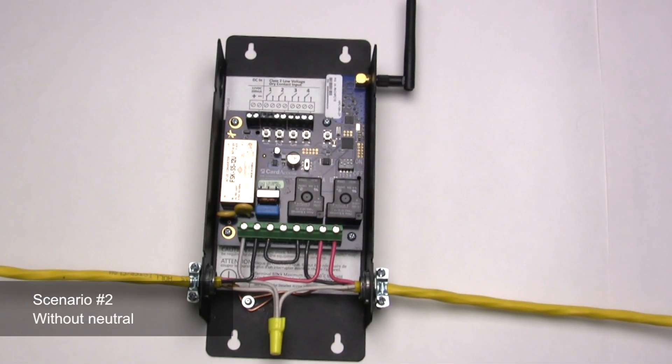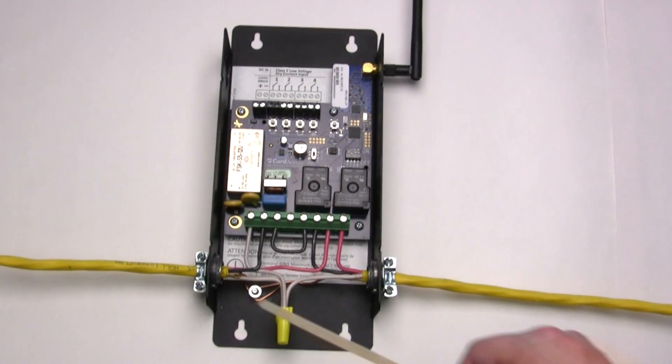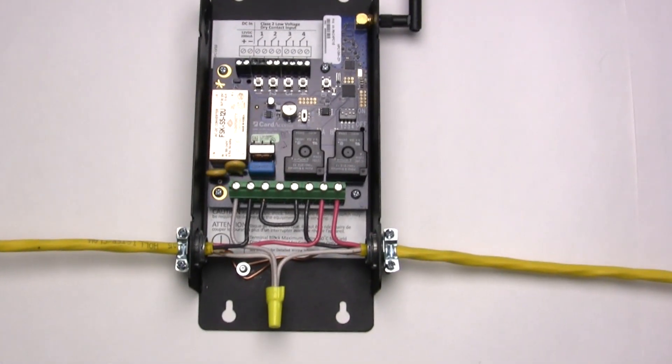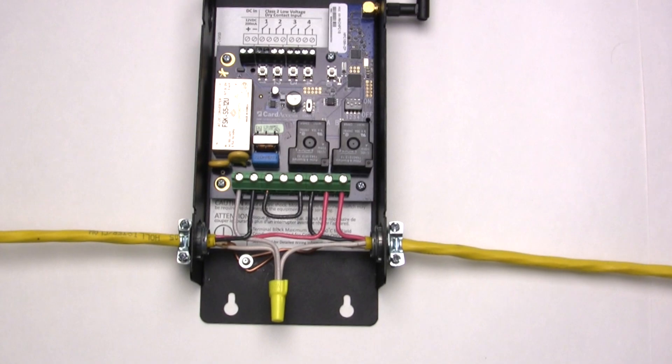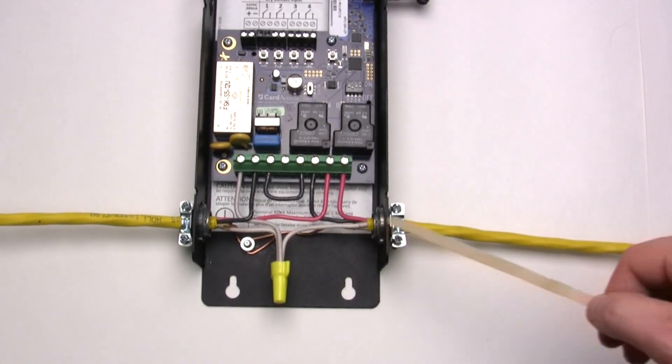So this is another scenario for the 240 volt load. This one's not as common, however it is useful for any scenario that requires the neutral to come back through, such as an oven or a range where the heating element is 240 volts, but the control panel is only 110. So on the 110 circuit, the neutral is required to come back through.